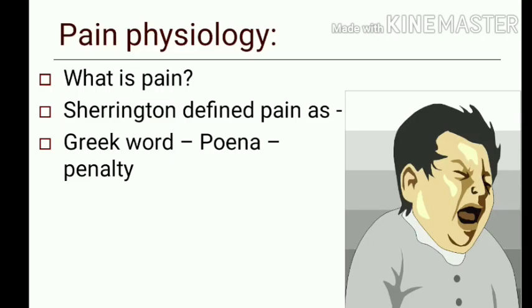Today we will discuss pain physiology. Pain is an unpleasant sensation which is aroused by stimuli that damage the innervated tissue. Sherrington defined pain as a psychical adjunct of imperative protractive reflex — psychical meaning related to mind, adjunct meaning joint, and imperative meaning urgent. Pain comes from the Greek word 'poina' that means penalty.